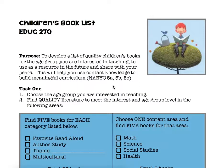This is the video introduction for the children's book list project for Education 270. The purpose of this project is to develop a list of books for the age group that you're most interested in teaching. This can then be a resource for you in the future in your classroom, and you're going to be sharing this with your peers and building book lists from them. This will help you use content knowledge to build meaningful curriculum in your classroom, which satisfies NACI standards 5A, 5B, and 5C.